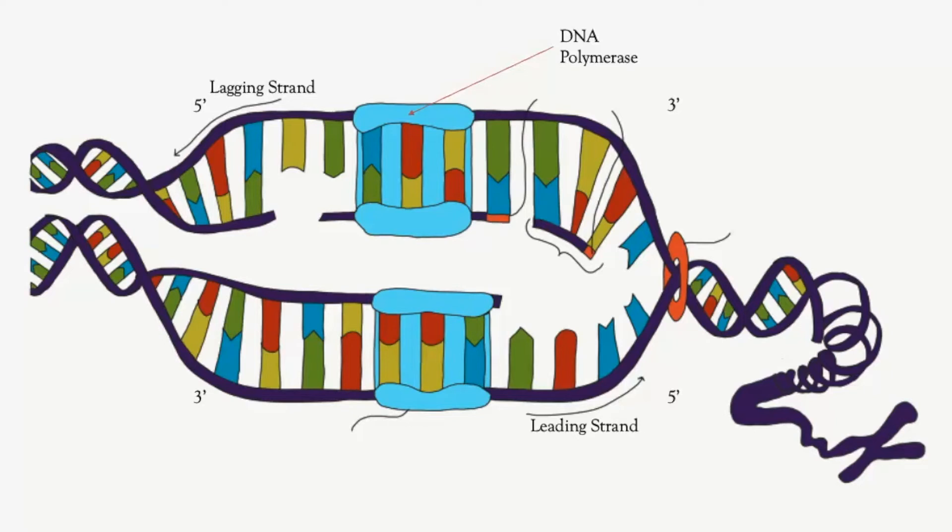The leading strand has DNA polymerase bind nucleotides in a continuous and steady fashion. The process of the lagging strand however uses the enzyme primase to lay primers to mark the beginning of the Okazaki fragments. The DNA polymerase then matches nucleotides to the parent strand in fragments about a thousand to two thousand nucleotides long. These fragments are called Okazaki fragments.